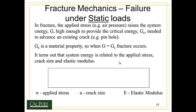So let's take a look now at fracture mechanics, now that we understand the concept of toughness. So fracture mechanics deals with failure under static loads, meaning loads that aren't changing. So in fracture, the applied stress, for example, air pressure inside of a pressurized aircraft cabin, raises the energy of the system. And we call that energy G. And that energy gets high enough to eventually reach a critical energy called G sub C, or G critical. And that G critical is the energy needed to make a crack grow.